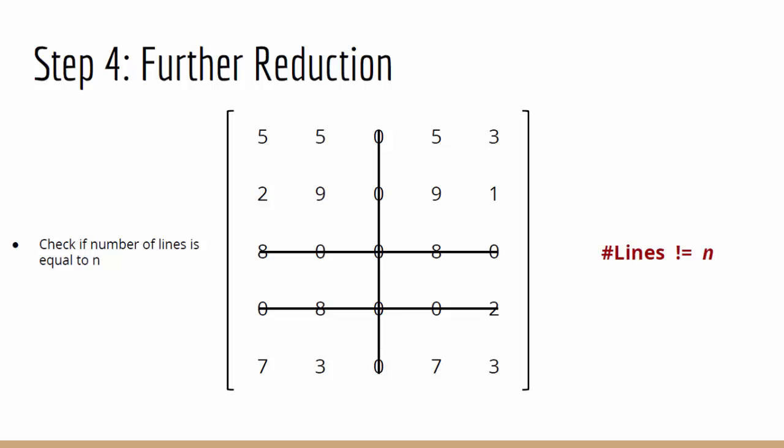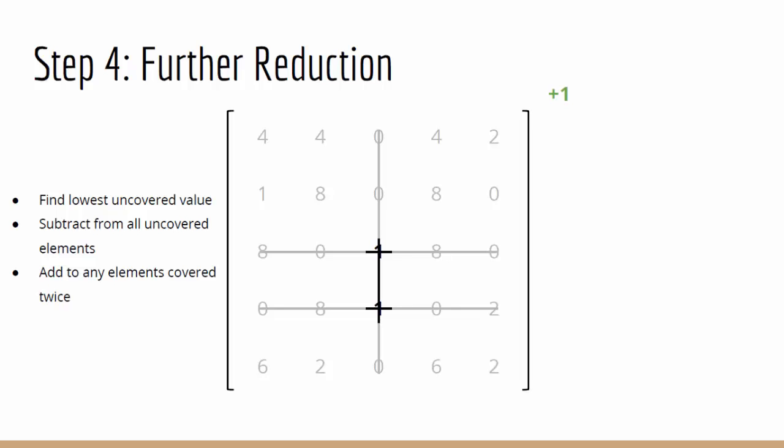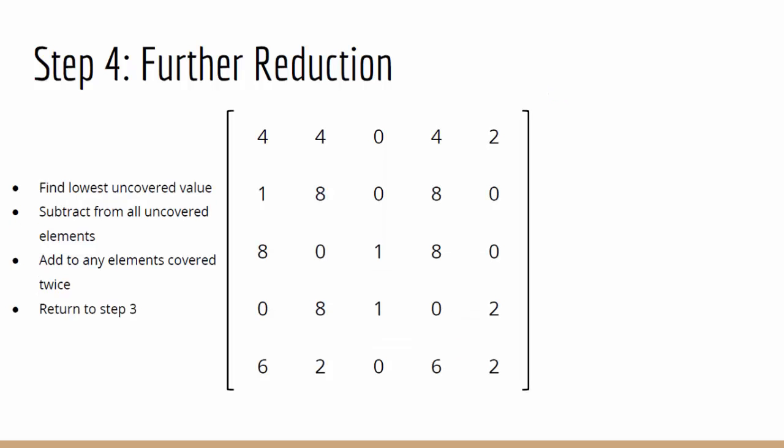We then look for the lowest uncovered element, which is this one here, and subtract it from all other uncovered elements in the matrix. This minimum value has to also be added onto any elements covered twice. So adding 1 to the 2 zeros covered twice gives us this new matrix.